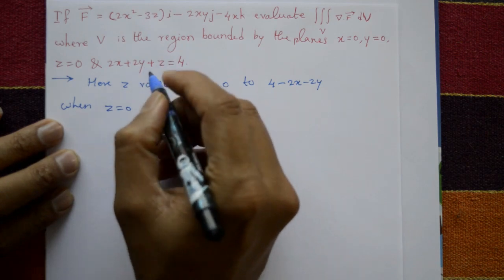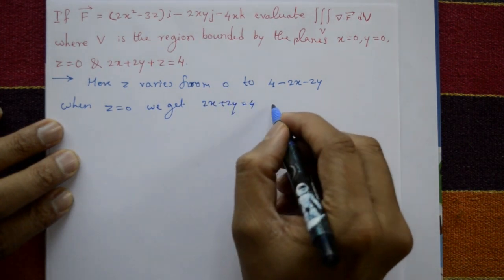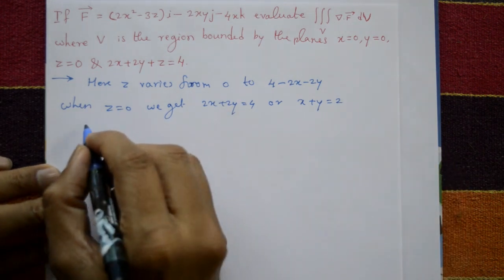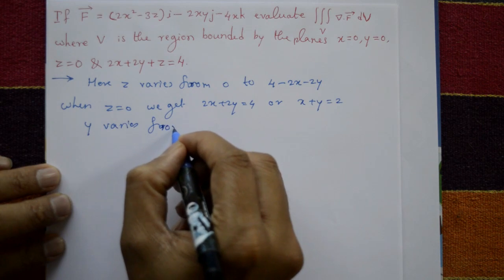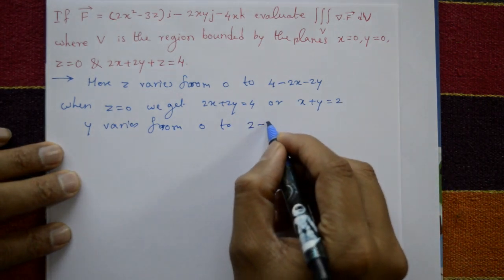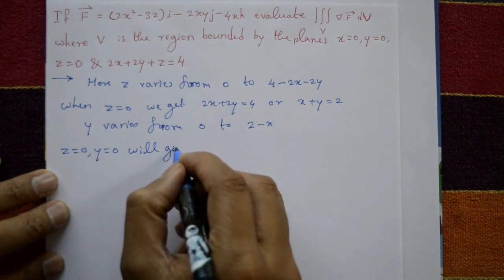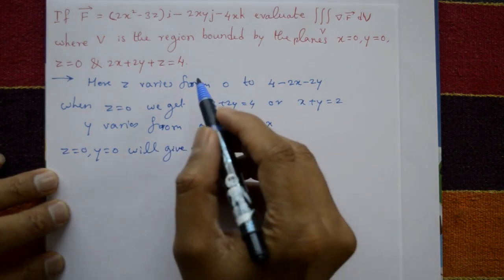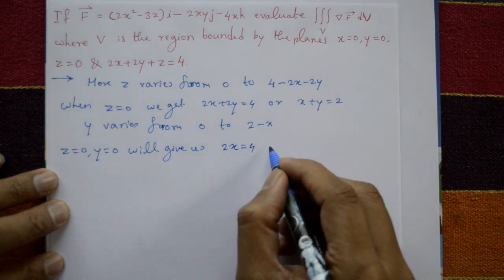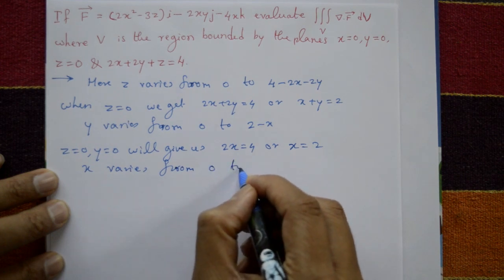When z = 0, we get 2x + 2y = 4, or 2(x + y) = 2, so x + y = 2. Next, y varies from y = 0 to y = 2 - x. Then putting z = 0 and y = 0, we get 2x = 4, so x = 2. Therefore x varies from 0 to 2.